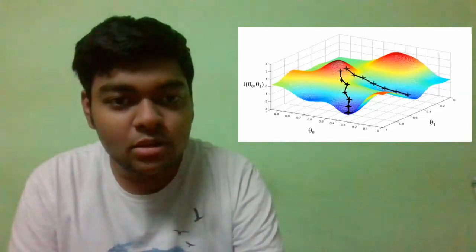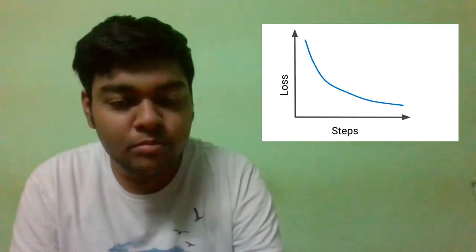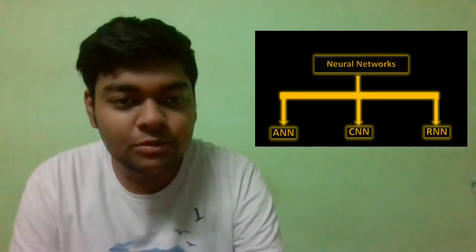So as the loss function keeps on decreasing, your neural network gets better at mapping these certain inputs to certain outputs. Basically, there are three types of neural networks: ANNs, CNNs, and RNNs, and we will talk about them in the upcoming videos in this playlist.